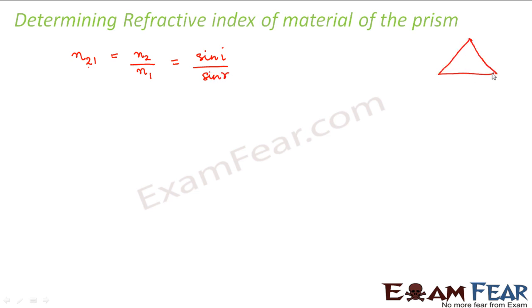if this is my prism, the refractive index inside is n2 and the refractive index outside is n1, right? So we basically want to evaluate the value of n21 that is refractive index of 2 with respect to 1.